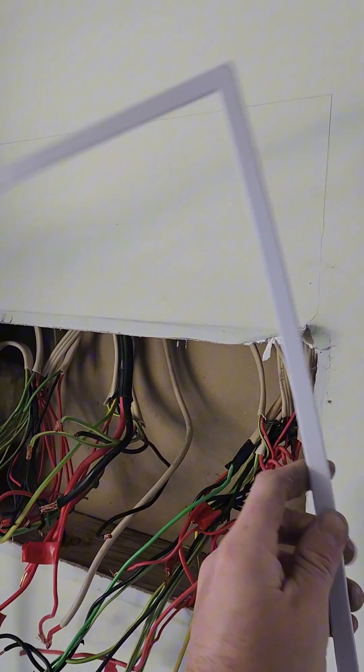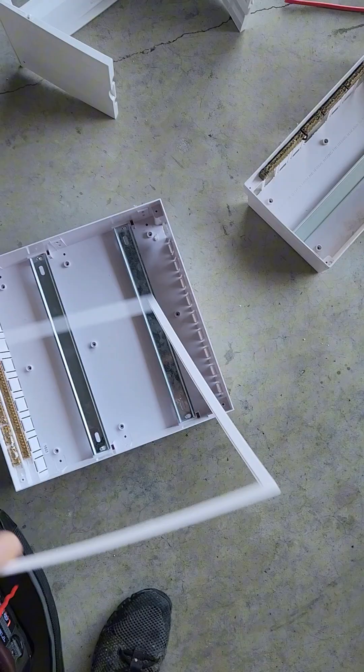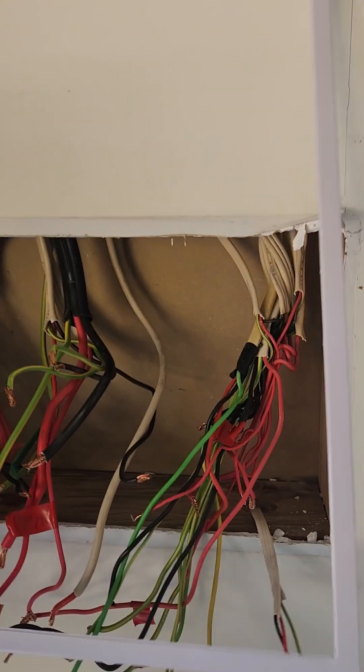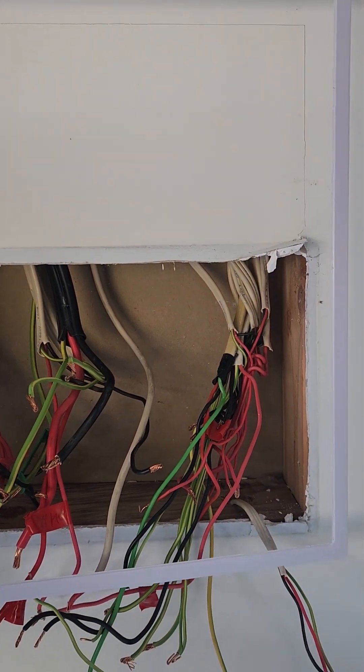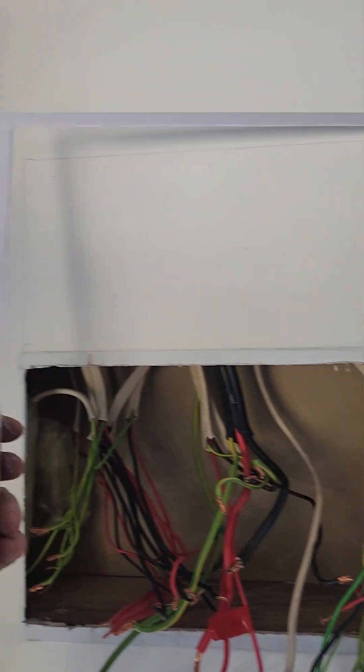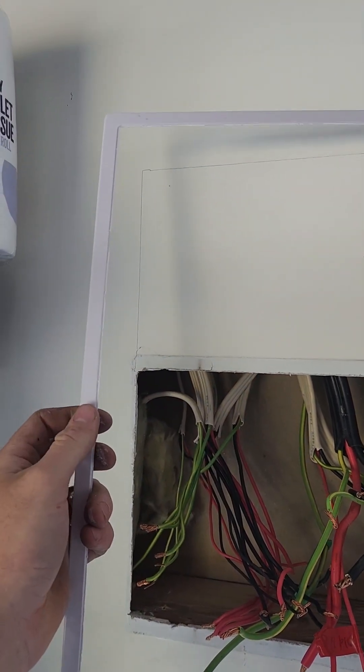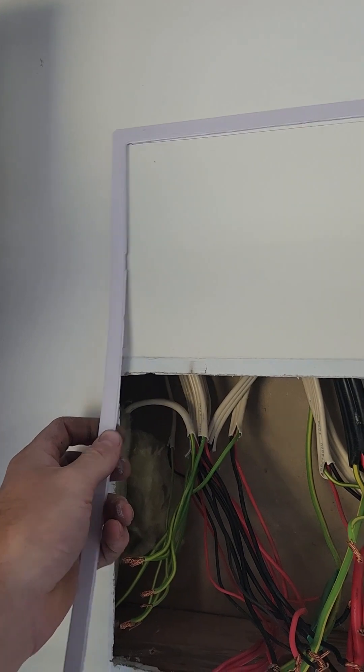Retrofit a switchboard. You've got to take this flange off that goes around the outside of the switchboard. Because that would usually sit in behind the jib and against the studs. But if you take it off one piece then you can use it as a template for your cutting hole.